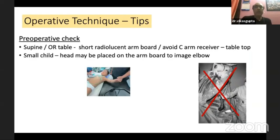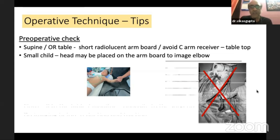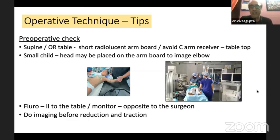Before performing closed pinning, preoperatively check that you have an OR table with a short radiolucent arm board. At times you may need to place the child's head on the arm board to better image the elbow. Avoid having the C-arm receiver at the tabletop — in an unstable reduction you may need to rotate the C-arm instead of rotating the elbow. Fluoroscopy should be parallel to the table, monitor opposite the surgeon. Do the imaging before you start reducing and applying traction, because good films may be difficult to obtain due to pain.